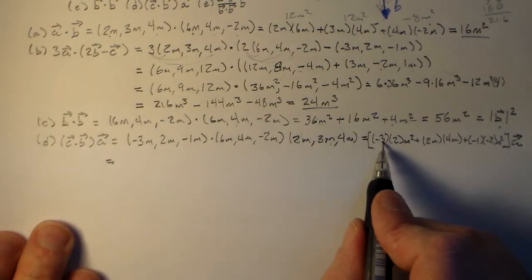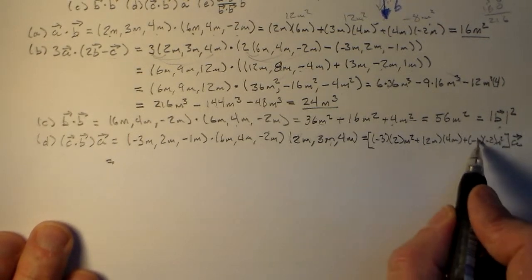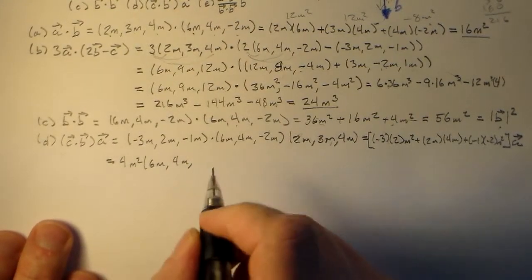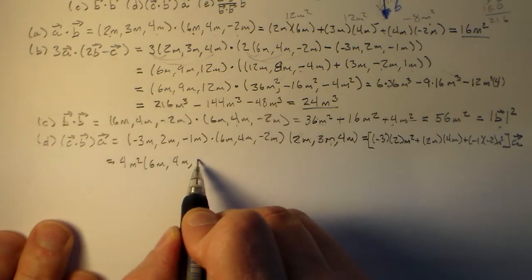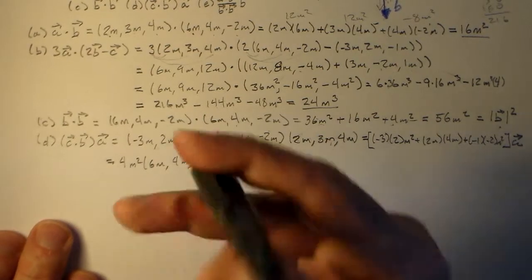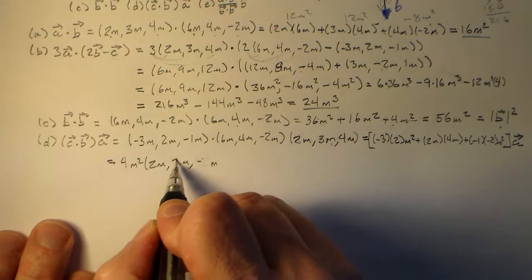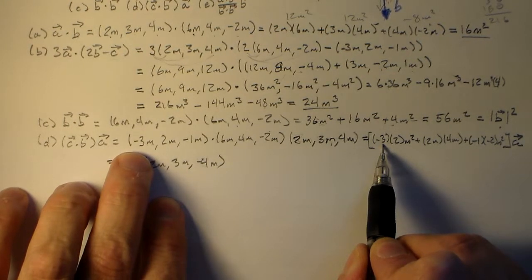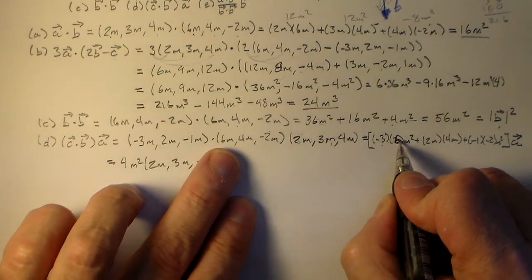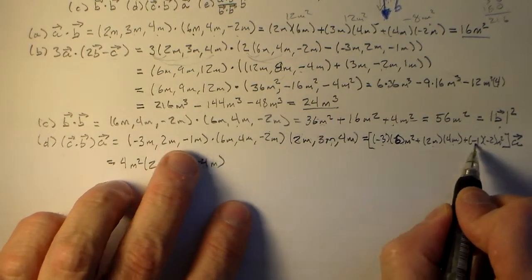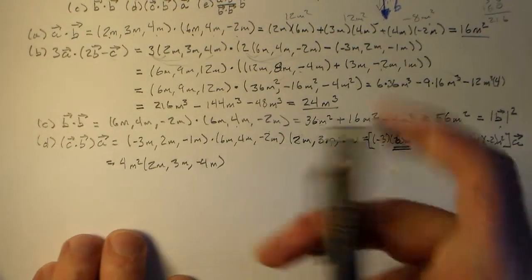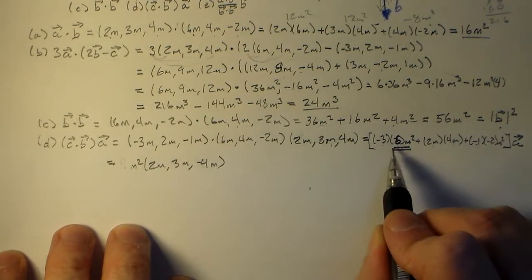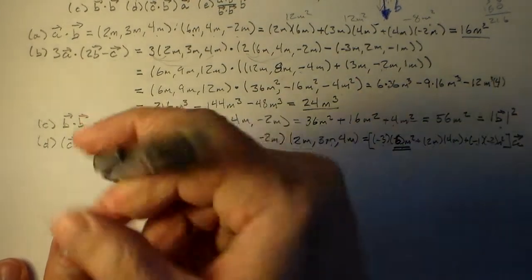So we have minus 3 times 6 meters squared plus 2 times 4 meters squared plus minus 1 times minus 2 meters squared. All that times the vector a. I'll just write a here because I'm out of screen. So let's go ahead and do the sum. That's minus 18 plus 8 is at minus 10 plus 2 is at minus 8. Okay, so equals minus 8 meters squared.